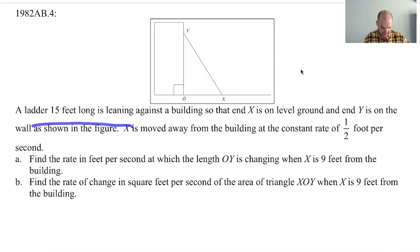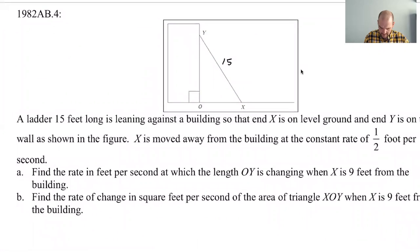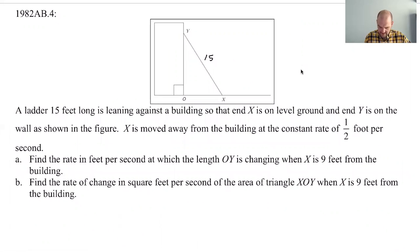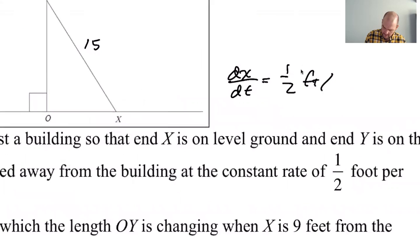A ladder 15 feet long, leaning against a building so that end X is on level ground and end Y is on the wall. So this is always 15, it cannot change, and that's important. X is moved away from the building at a constant rate of one-half foot per second. So I always think it's really important to get the rates right. The way that I think about it is, over time, is the distance getting bigger or smaller? So if you're moving away from the building, you're going this way. Over time, X is getting bigger, so this is basically telling me that dx/dt is positive. So that's going to be one-half foot per second.